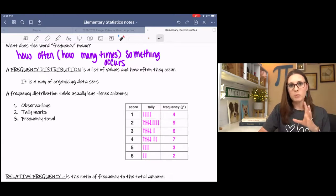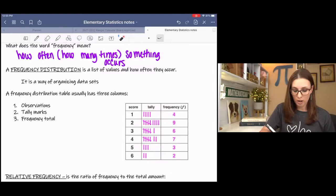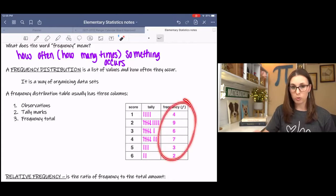Because a lot of times your data is not going to be in order, it's going to be all mixed. And so as you're going through your data, when you see a one, you put a tally mark, a two, a three, a four, a five, a six. And then when you reach five, you put a cross through it to show five. And then you can easily count those up for your frequency totals.